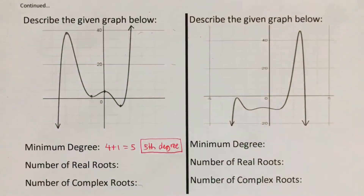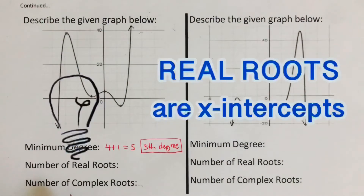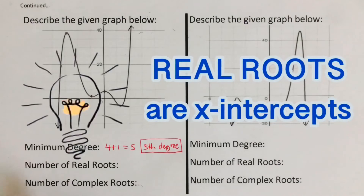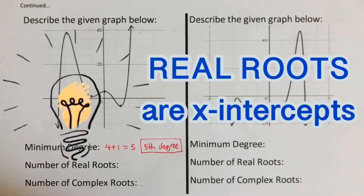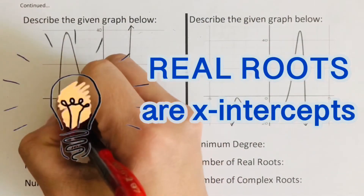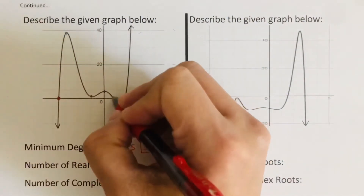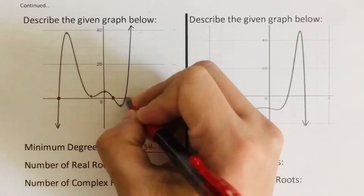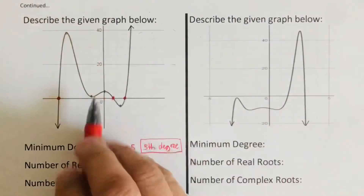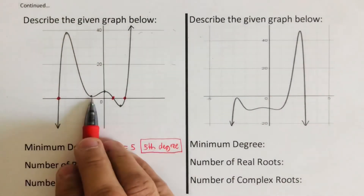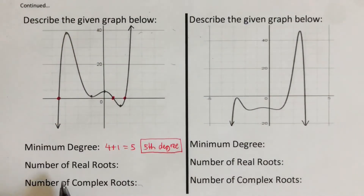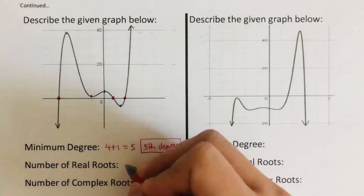Let's determine the number of real roots. Real roots are the x-intercepts. In this problem we have one, two, and three x-intercepts — the other portion of the graph is not touching the x-axis. So there are three real roots.